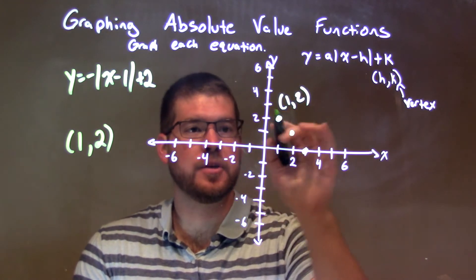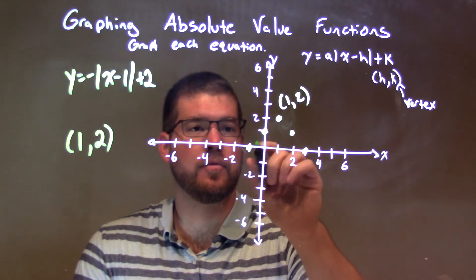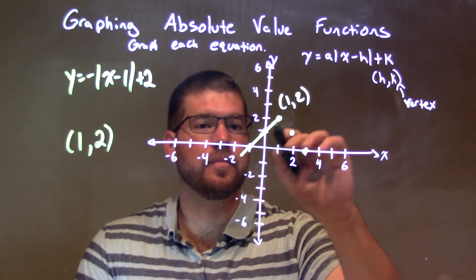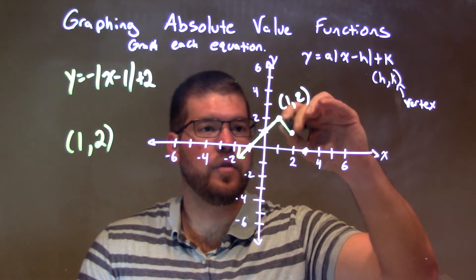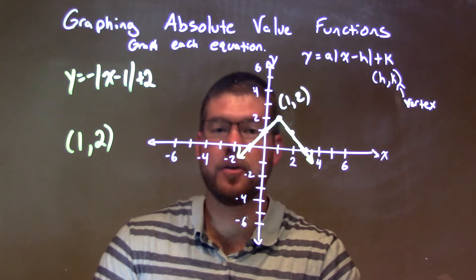Now we mirror that. We mirror that shape right here. Down 1 to the left 1, down 1 to the left 1. Connect our dots to make our v shape. And then we have our graph and our answer.